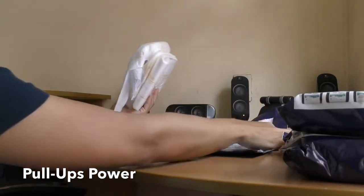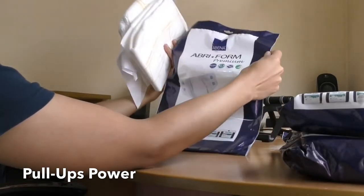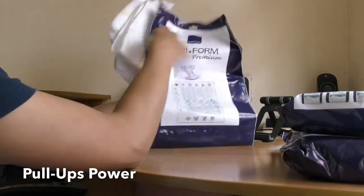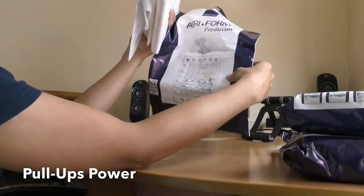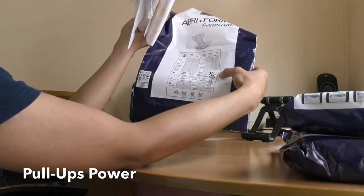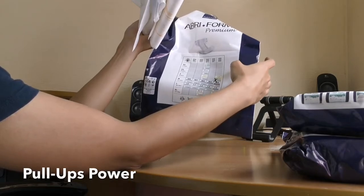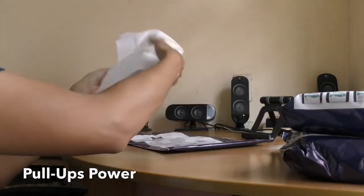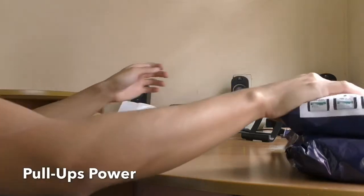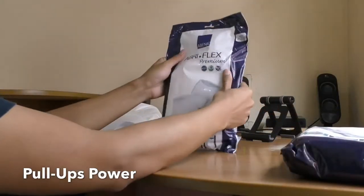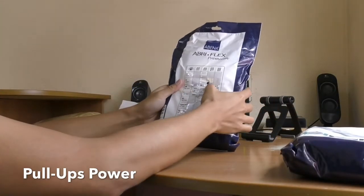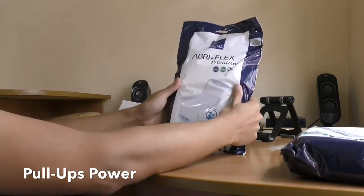So, let's take AbriFlex Premium S for small, level 4 absorbency. Let's go with another small, level 2 in absorbency.